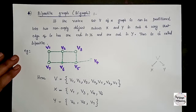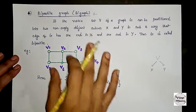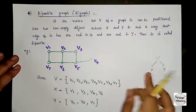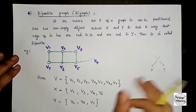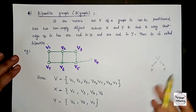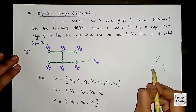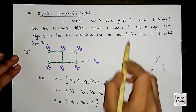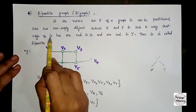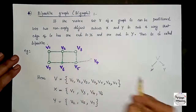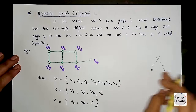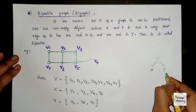We have a graph G. The vertex set is partitioned into two disjoint subsets. Every edge of G has one end in X and one end in Y.